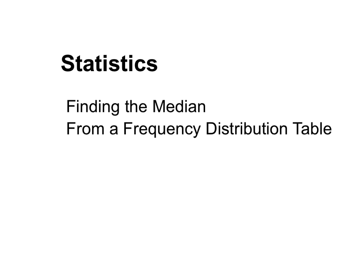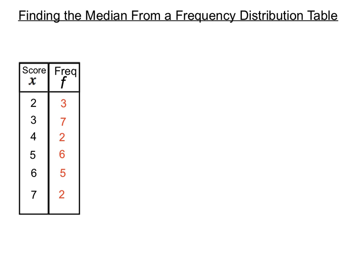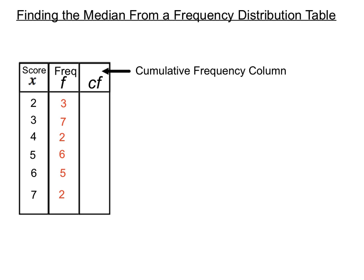This is a statistics video exploring how we find the median from a frequency distribution table. We have a score and a frequency column in this frequency distribution table. To find the median of this set of scores, we have to add an extra column called a cumulative frequency column.